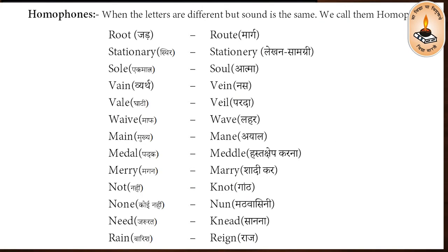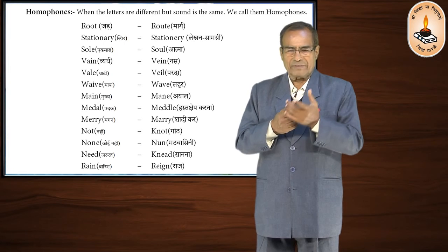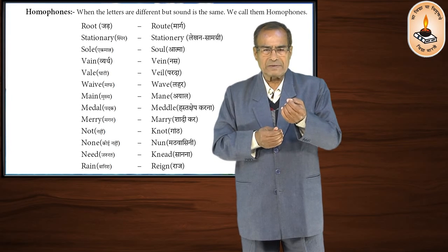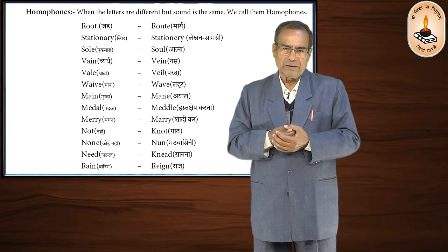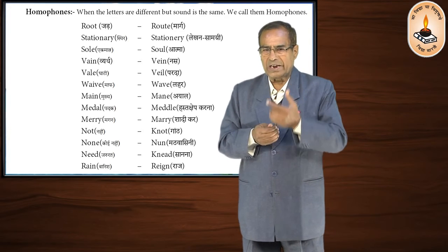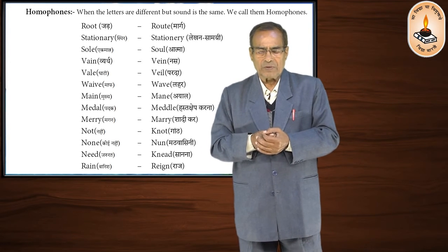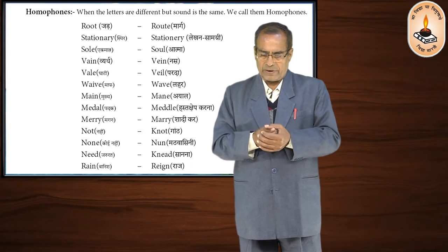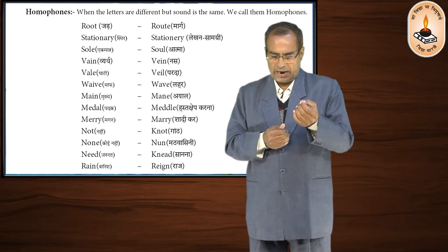We have the word 'vain', which means 'bekaar' — useless. And we have the word 'vein', v-e-i-n, with the same sound but different structure, meaning 'nasa' — a blood vessel. We also have the word 'veil', v-e-i-l, which means 'ghungat'.